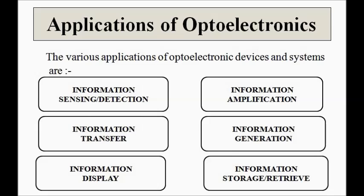The applications of optoelectronics devices and systems include: information sensing and detection in sensors and transducers for various parameters; data transfer from one point to another; information display; information amplification; signal generation; and information storage and retrieval. These are just the tip of the iceberg — there are countless other applications that optoelectronics can be used for.